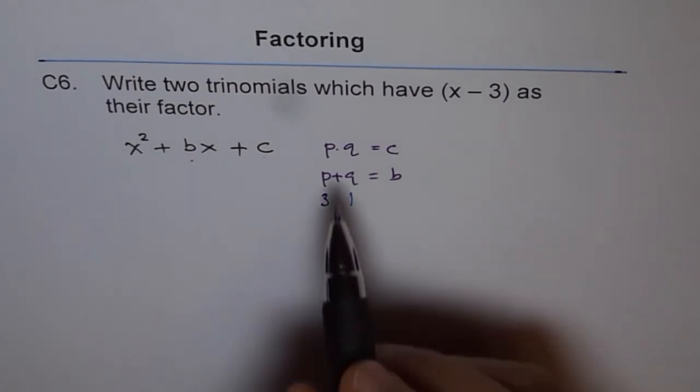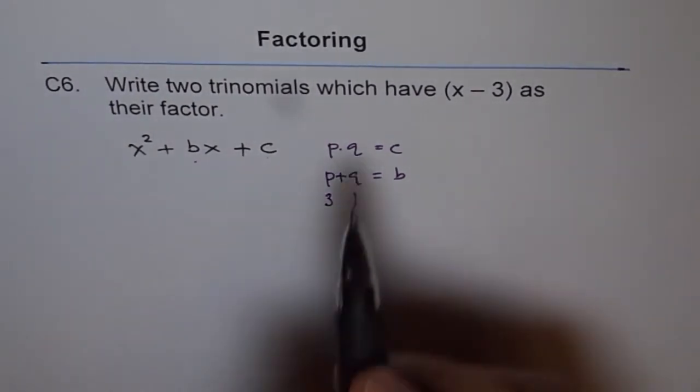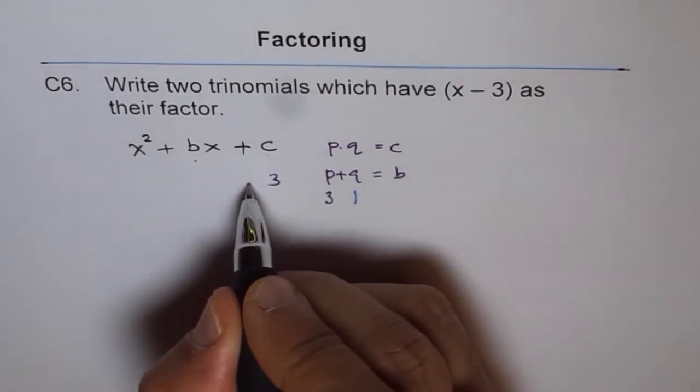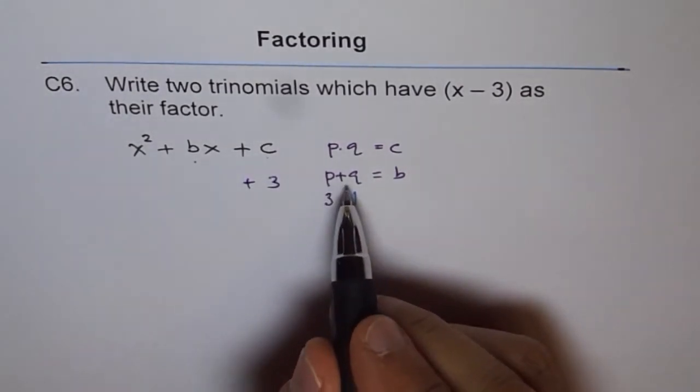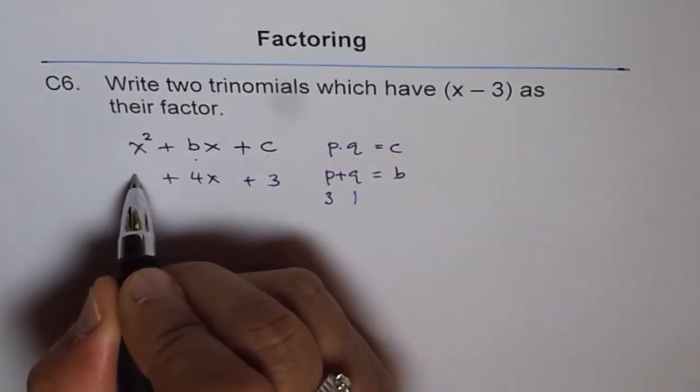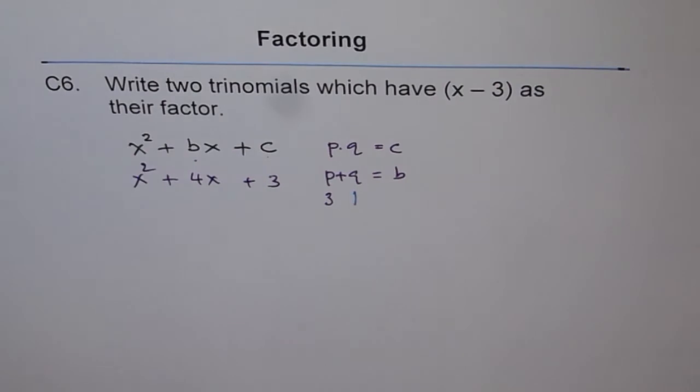If q is 1, then p times q, which is c, becomes 3. So we get 3 here. And p plus q, which is b, becomes 4, so we get 4x plus x squared. So that is our solution.